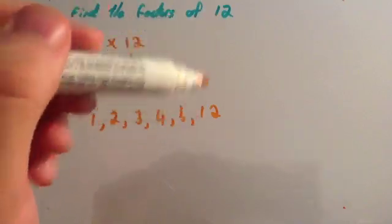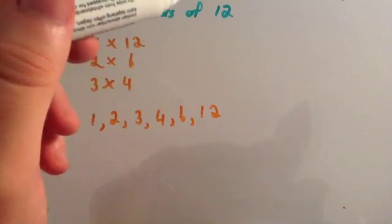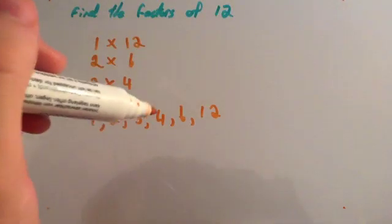If you try to divide by 7, 8, 9, 10, or 11 there are remainders, and 12 divided by 12 is 1. So the factors of 12 are 1, 2, 3, 4, 6, and 12.